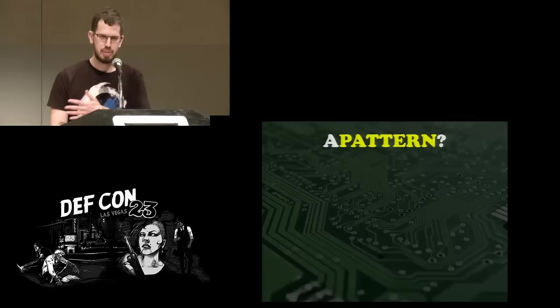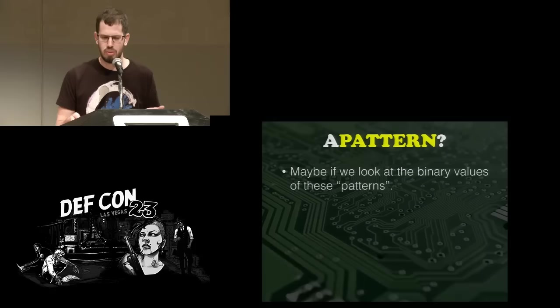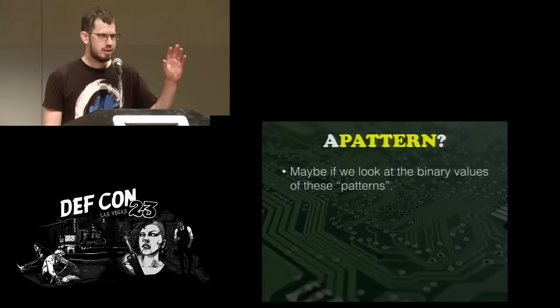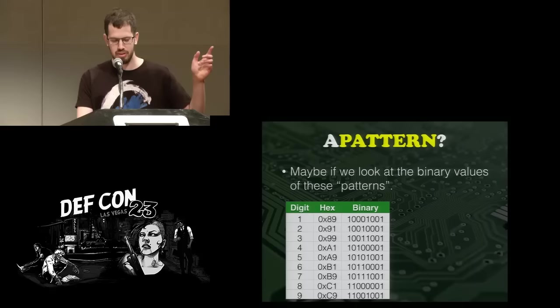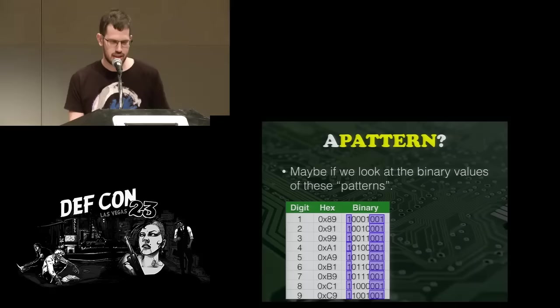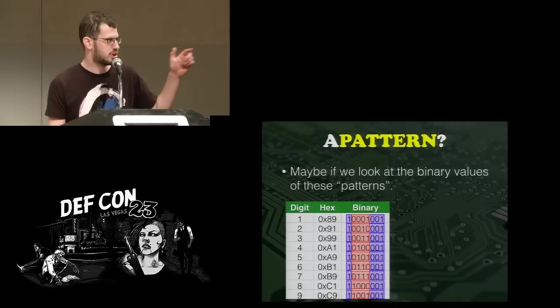We took these values and also looked at their binary representations. The table shows the digit, the hex value, and the binary representation. There is this constant portion of the byte and also four bits in the middle that keep changing — and not only are they changing, they are incremented, forming a sort of counter. A counter in the middle of the byte is pretty weird.